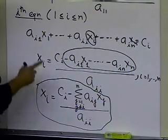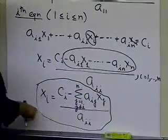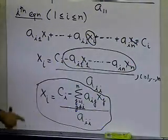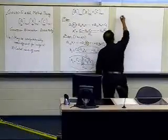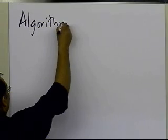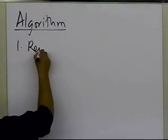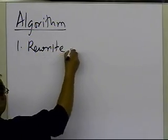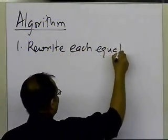I'm going to write down the algorithm, and that will make it a little bit clearer. The main thing is to understand how we have rewritten each of the equations. So let's go ahead and write the algorithm to see how one would go about proceeding to program the Gauss-Seidel method. The first thing we have to do is to rewrite each equation in that form.